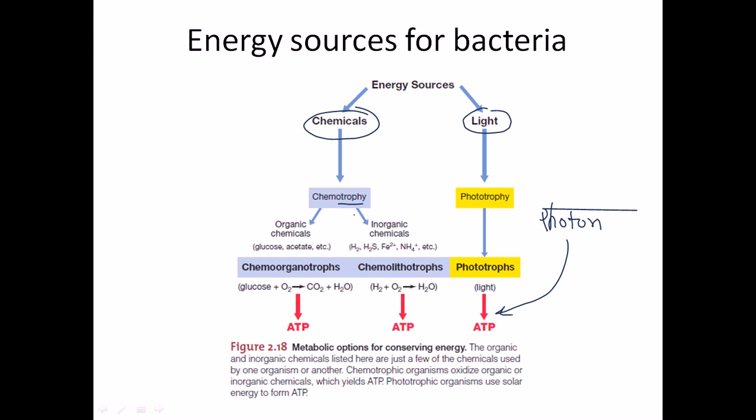They can be divided into two types because sometimes they can get the energy from organic chemicals, sometimes from inorganic chemicals. For organic chemicals the chemicals are glucose, acetate, etc. but for inorganic chemicals it is hydrogen, hydrogen disulfide, iron and ammonium.